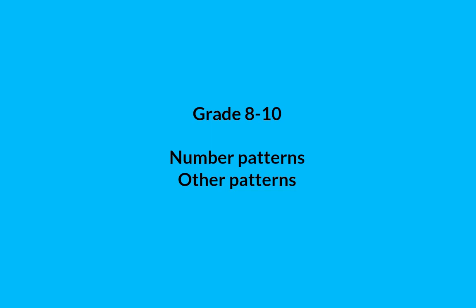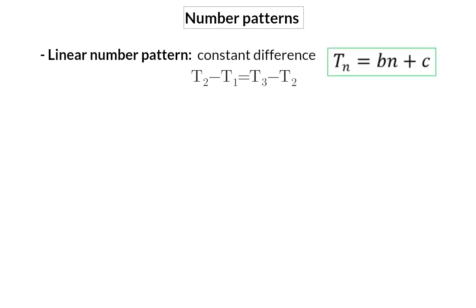Up to now we focused on linear number patterns. Now we're going to have a look at a few other patterns. A linear number pattern is a pattern that has a constant difference between consecutive terms. The general formula will then be Tn equals bn plus c.